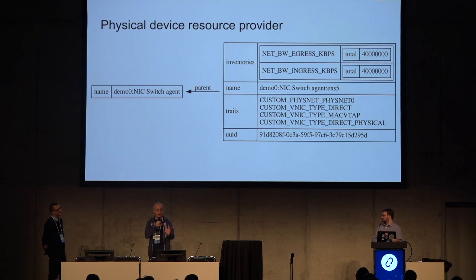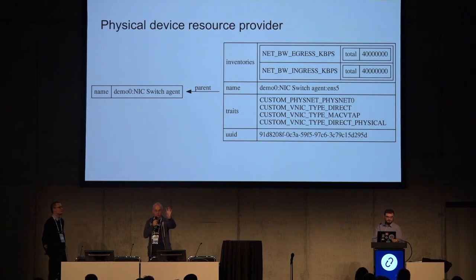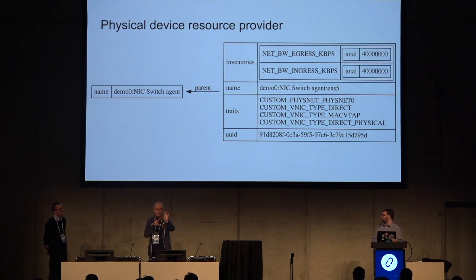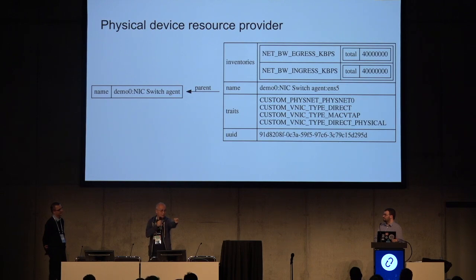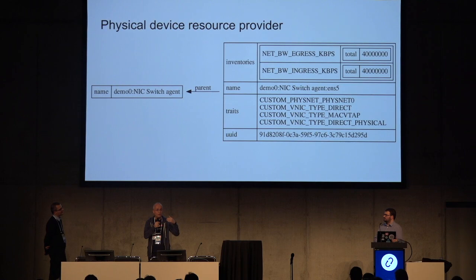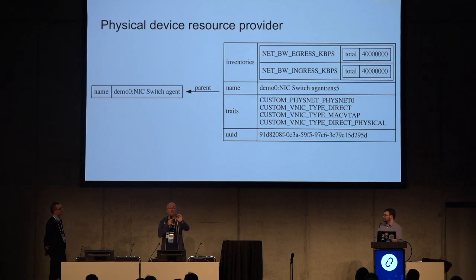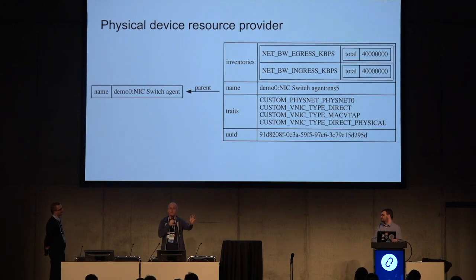For those who don't know what a VNIC type is: when you create a port and want it realized in a compute host, you specify the VNIC type. In other words, you tell Neutron: when you wire this port in a compute host, I want it connected directly to a physical network interface — that corresponds to VNIC type direct. As a user, when you create your port you specify this at the binding process. The binding process is the moment where Neutron physically realizes your port in whatever compute host that port is going to live.